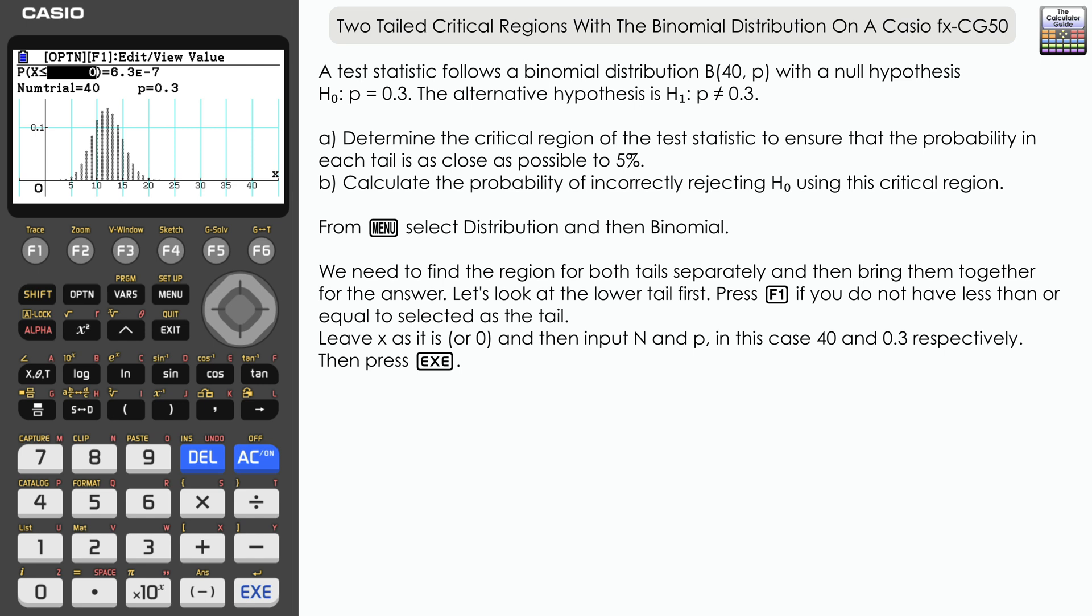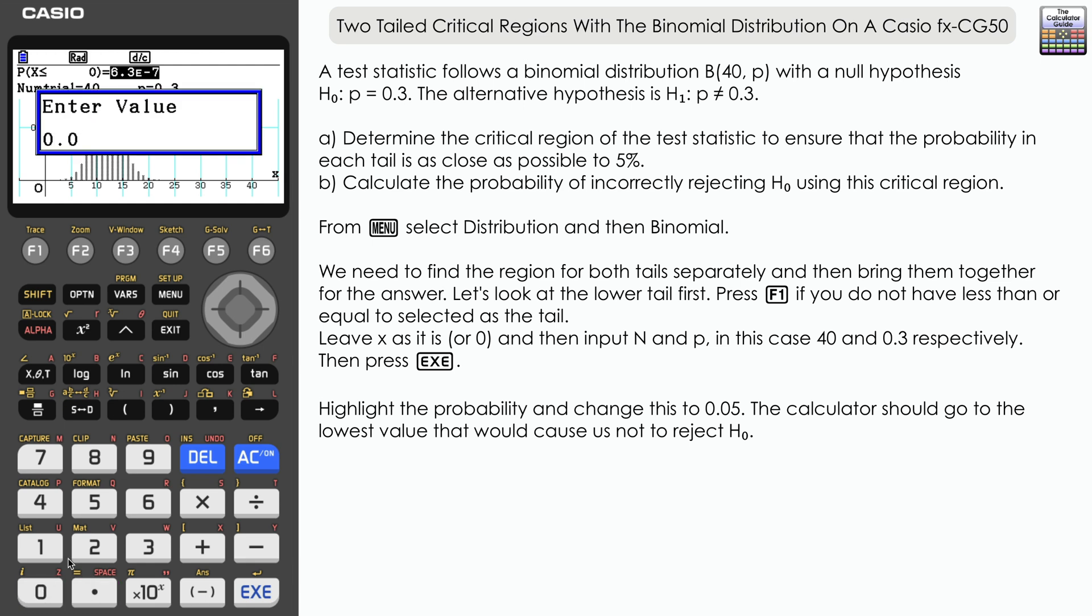Within the distribution display, we need to alter the probability to match the significance level. The question says we need as close as possible to 5%, that's 0.05, and that's what we're going to input here and press Execute.